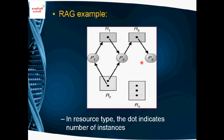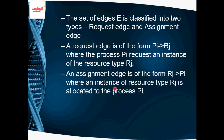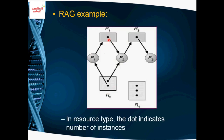For example, processes P1, P2, P3 and resources R1, R2, R3, R4 are shown. Inside each resource rectangle, dots indicate the number of instances. For example, R1 represents the CPU with 1 dot meaning 1 CPU in the system. R2 is an input device with 2 dots meaning 2 input devices. R3 is memory. R4 is an output device with 3 dots meaning 3 output devices.